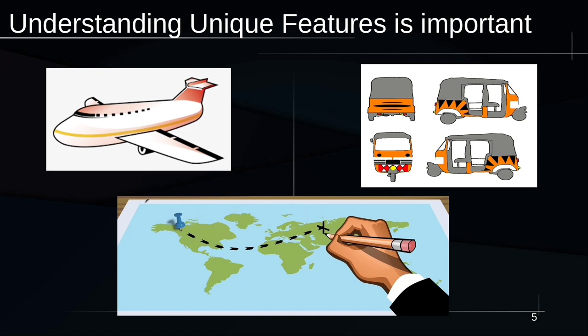You first try to understand the distance from origin to destination, then assess how much time you have to travel. Once you have the details of the travel or the need, you can look at different options like an aeroplane, an auto rickshaw, a train, a bus, a boat, or a combination of all these. When you make a decision for any action, you have to first understand the context and then look for different ways to achieve the task.